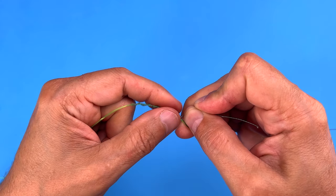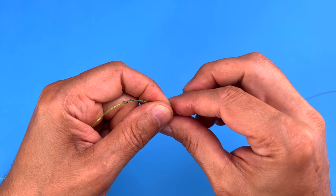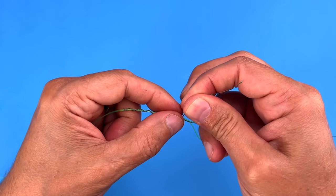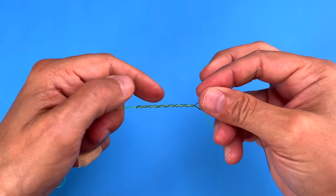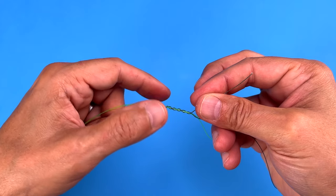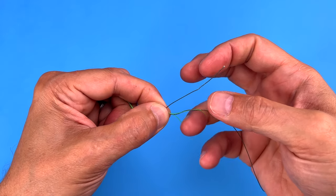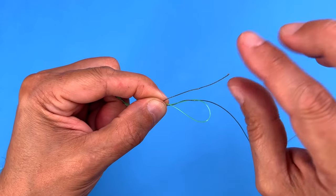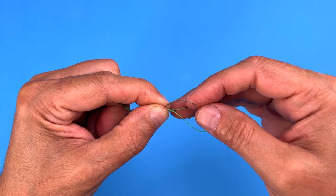And once you have that done, take the tag end of the braid, and now you're going to take the tag end and put it back through the loop just like this.